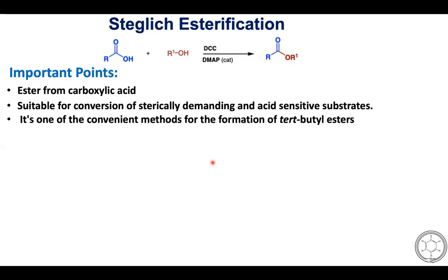According to this reaction, carboxylic acid and alcohol reacts under DCC and DMAP catalytic conditions to generate the corresponding ester compounds. In Steglitz esterification there are some important points to remember. The first point is it involves the preparation of esters from carboxylic acid, and this reaction is most suitable for conversion of sterically hindered as well as acid sensitive substrates.